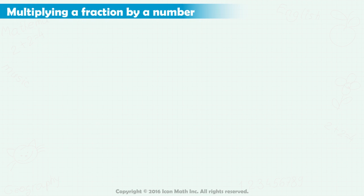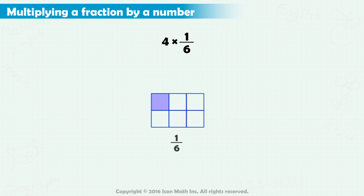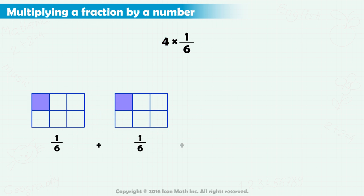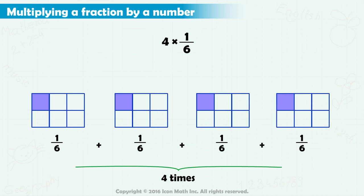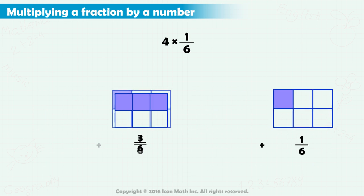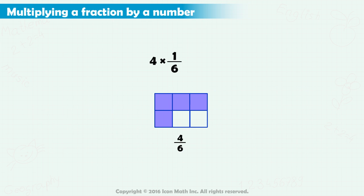For example, let's multiply 4 by 1 sixth. Here is 1 sixth represented by 1 shaded part out of a total of 6 parts. Multiplying it by 4 means that we need to add 1 sixth to itself 4 times, which is equal to 4 sixths, as you can see.